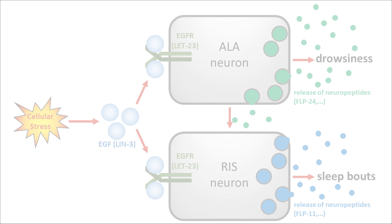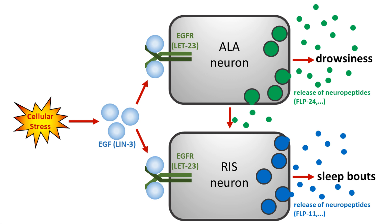EGFR signaling is conserved across animal species and has also been shown to promote sleep in other organisms like rodents and zebrafish. The principle of a combined series and parallel neural circuit to control drowsiness and sleep might thus be conserved as well.